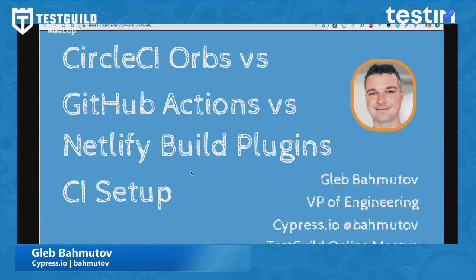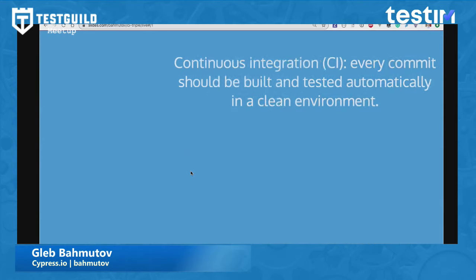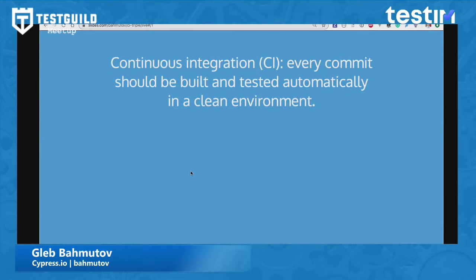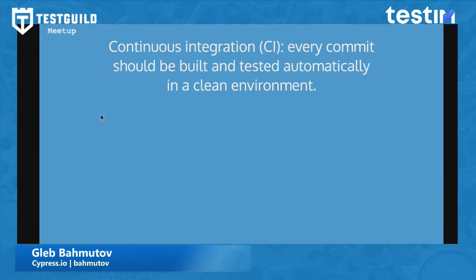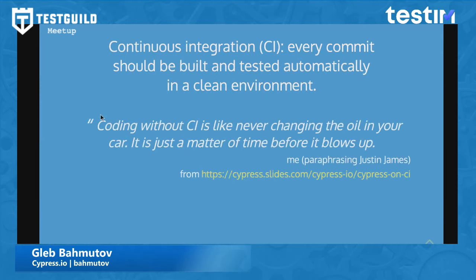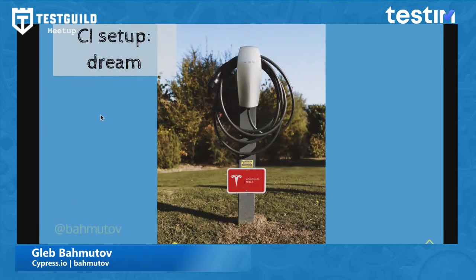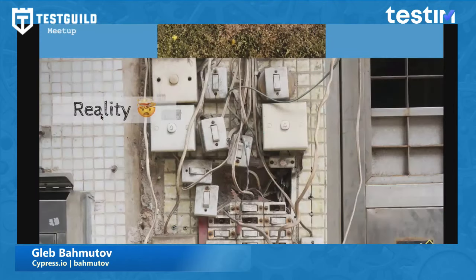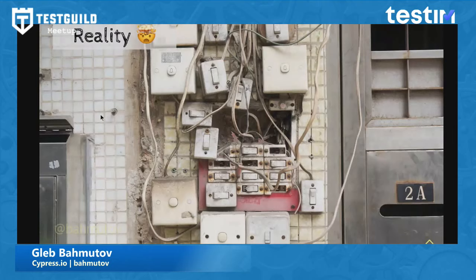I'm Gleb Bakmakov. I want to start with what CI is — continuous integration — a system where every commit should be built and tested automatically in a clean environment. If you don't have a CI system, what happens is like driving a car for a long time without an oil change — at some point it will just stop working. CI kind of looks like a nice clean box, but in reality it's not as easy. After a while, as your project matures, the CI configuration becomes a mess and nobody likes dealing with CI config files.